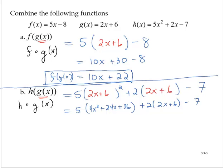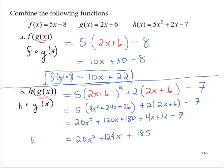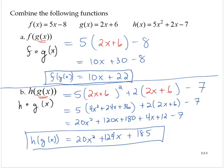Now we deal with any multiplications. Applying the distributive property gives 20x squared plus 120x plus 180 plus 4x plus 12 minus 7. Combining like terms gives us 20x squared plus 124x plus 185. So h compose g of x is 20x squared plus 124x plus 185.